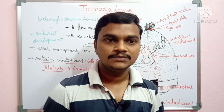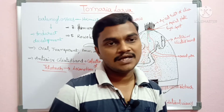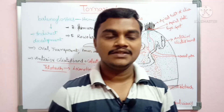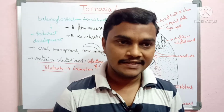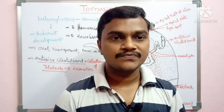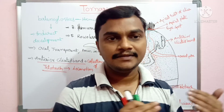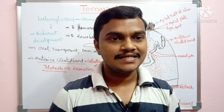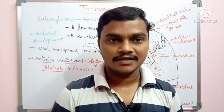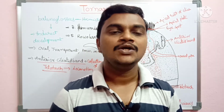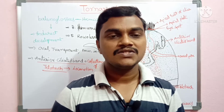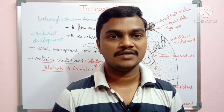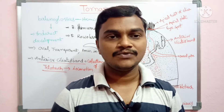In summary, the tornaria larva is the larval stage of Balanoglossus. It contains ciliated bands useful for different purposes. It undergoes metamorphosis and the size of the tornaria larva is 1 mm, and its shape is oval. Thank you for watching.